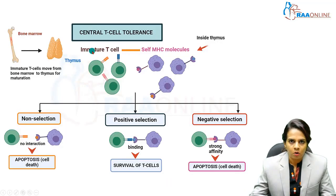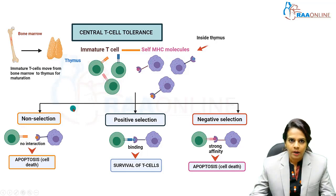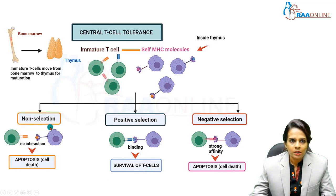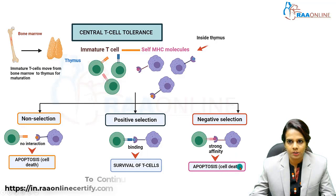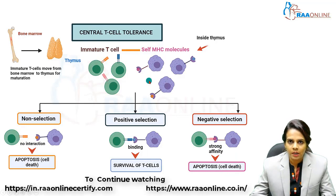In central T cell tolerance, immature T cells interact with self-antigens that are processed and presented by thymic antigen-presenting cells along with self-MHC. This results in one of three outcomes: non-selection, where there is no interaction and the cell dies; positive selection, which results in survival of T cells; or negative selection, where there is strong affinity leading to apoptosis and cell death. In central tolerance, self-reactive T cells are deleted by apoptosis through negative selection.